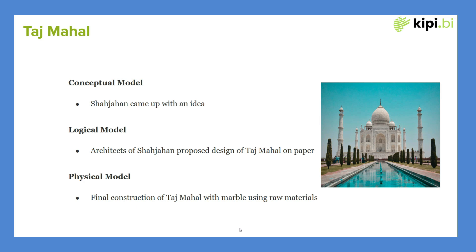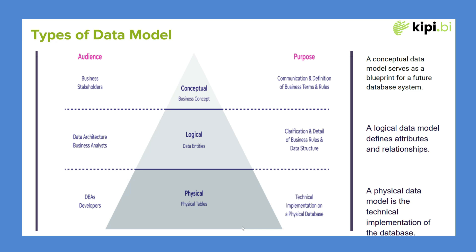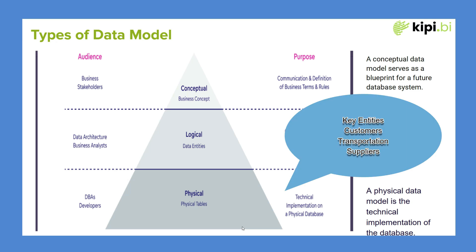The Taj Mahal, one of the wonders of the world, passed through these same stages. The first stage was the conceptual model — where Shah Jahan came up with an idea. Similarly, taking the example of a retail store, in the conceptual data model stage we are talking about the business concept: how you are carrying out your business and what the key entities are. There will be customers, buyers, and different locations.